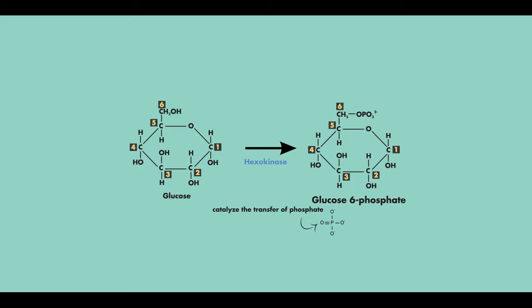In the first reaction, hexokinase takes a phosphate from ATP and attaches it to the 6-carbon of glucose, which is why the product of this reaction turns out to be glucose 6-phosphate, and as a result, ATP is converted to adenosine diphosphate, or ADP.